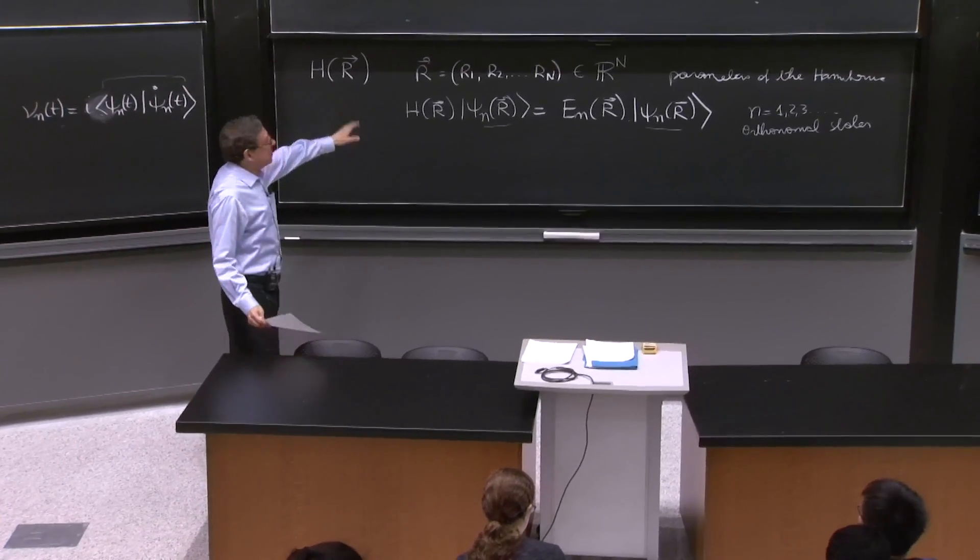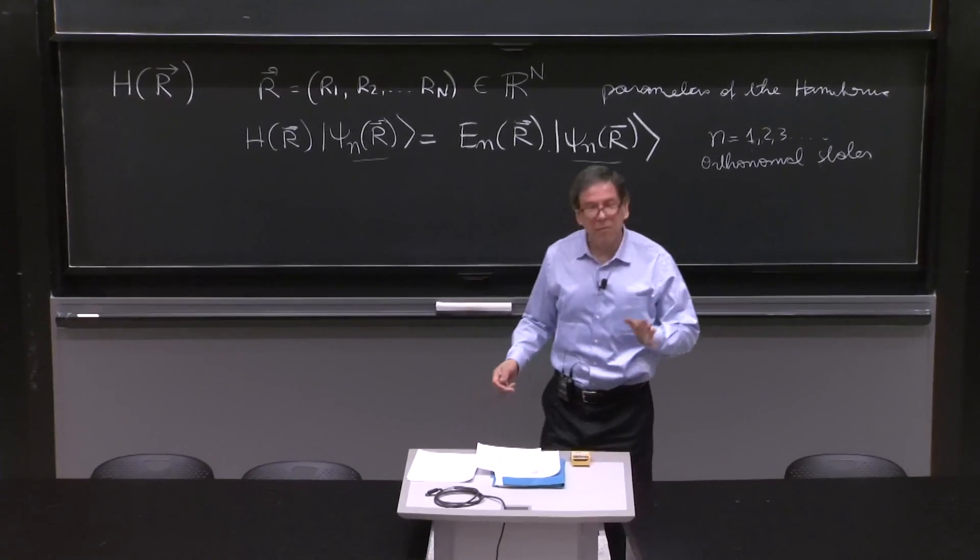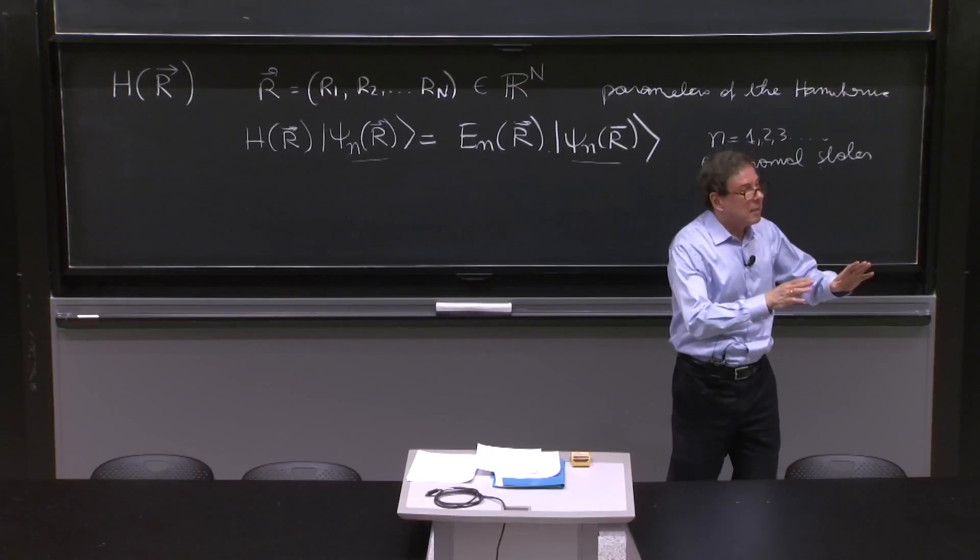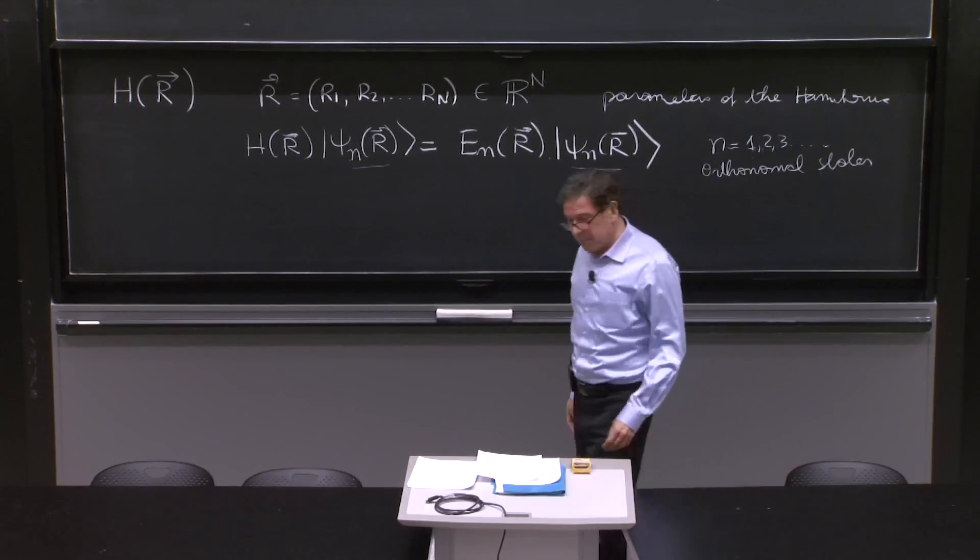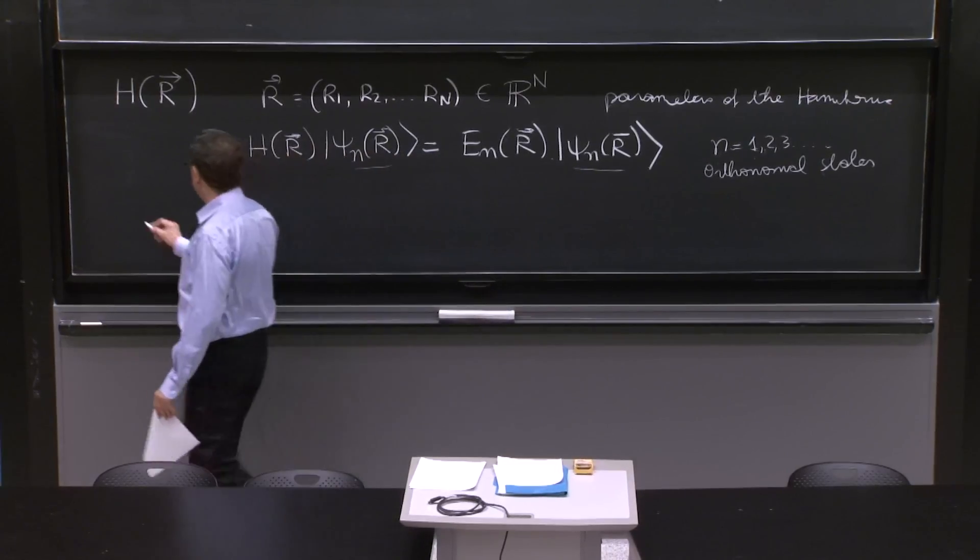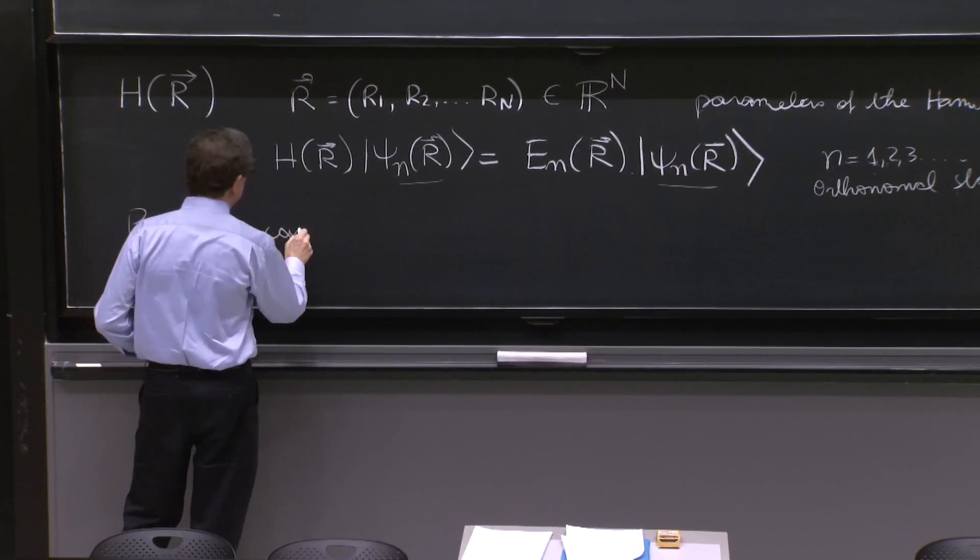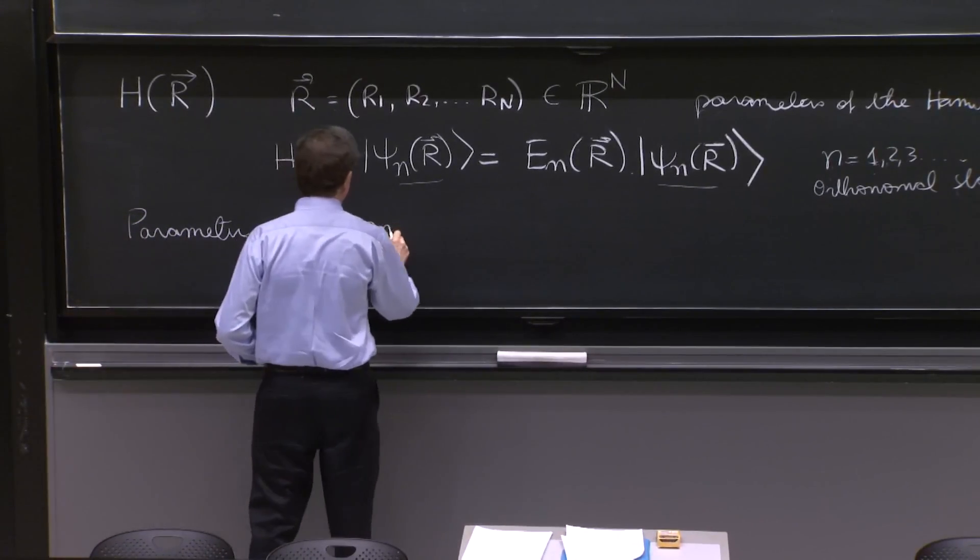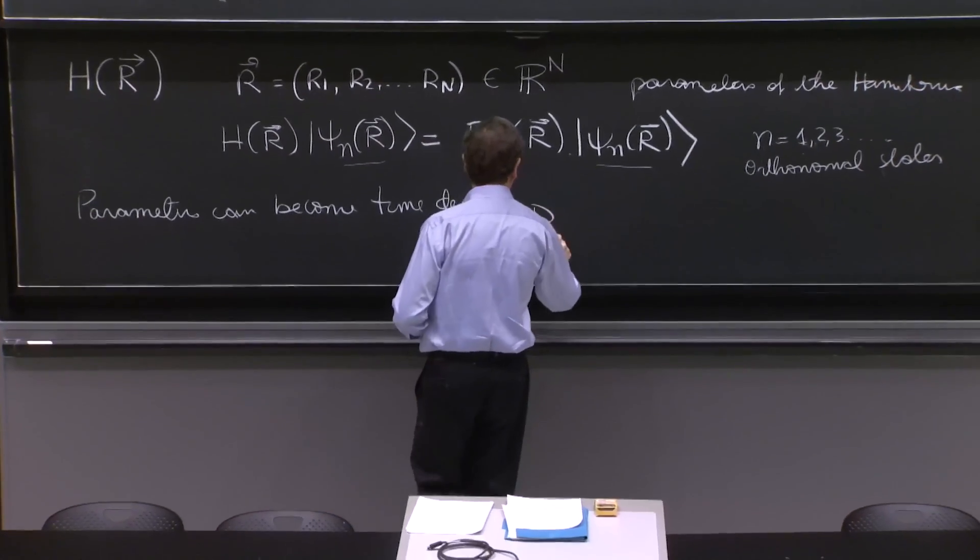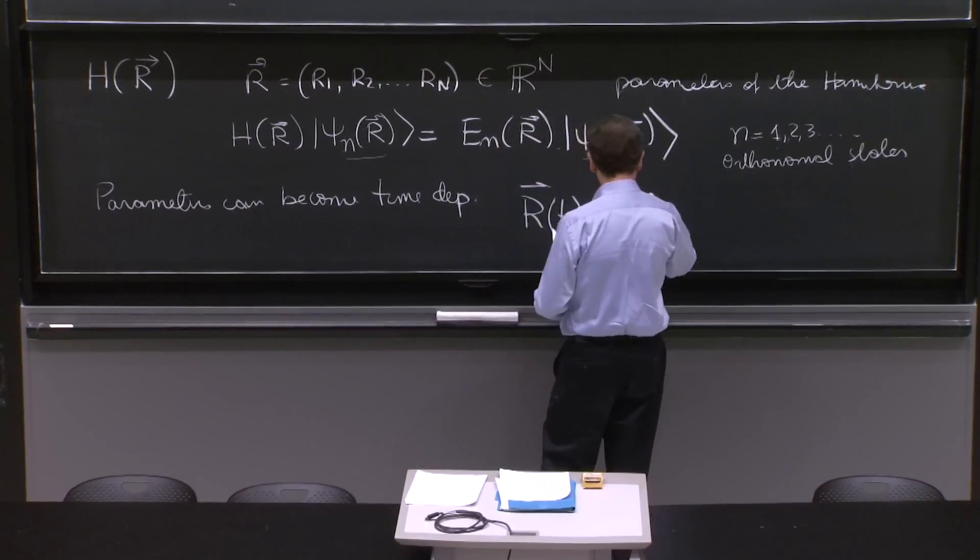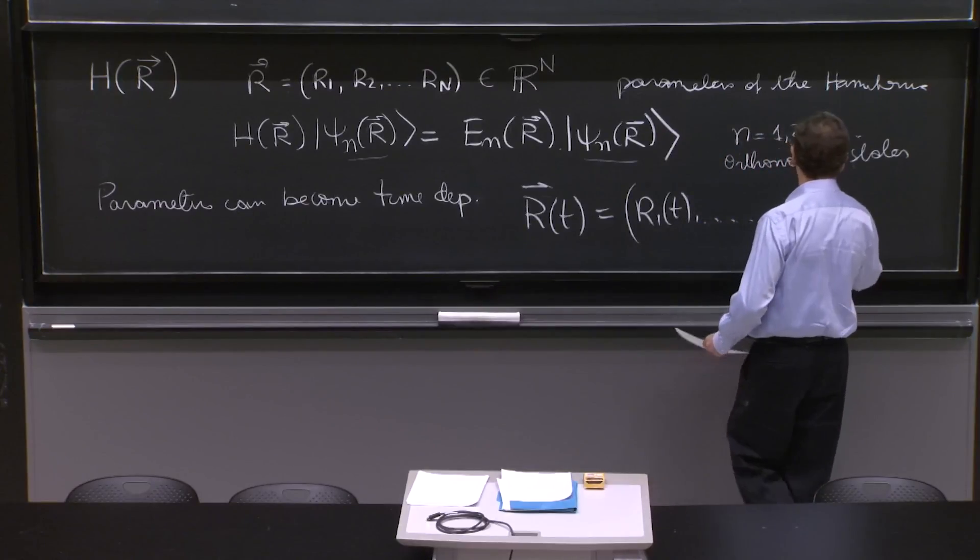So this is a general situation. And now we imagine that for some reason, these parameters start to begin to depend on time. So they become time dependent. Parameters can become time dependent. So that you now have r of t vector is r1 of t up to rn of t.